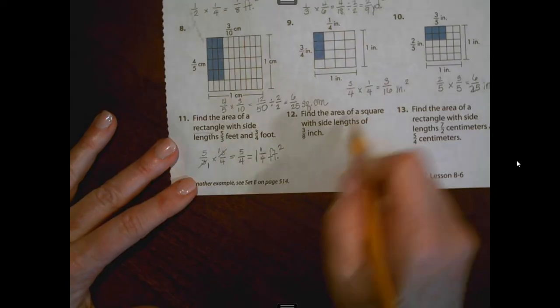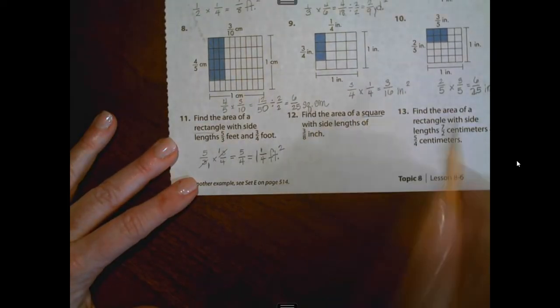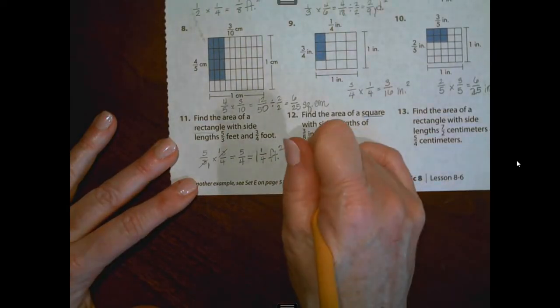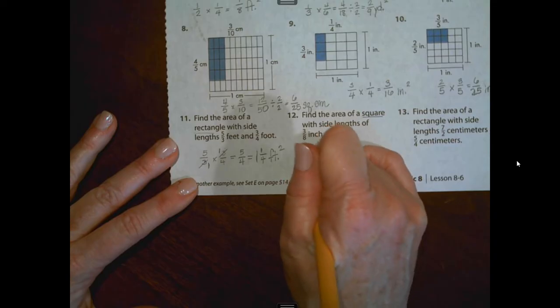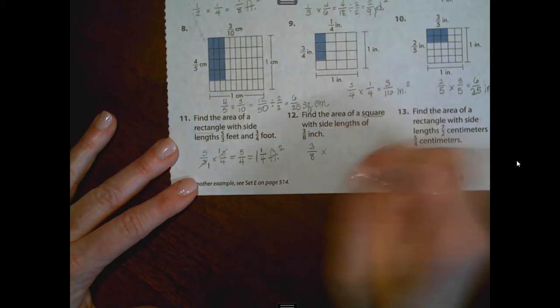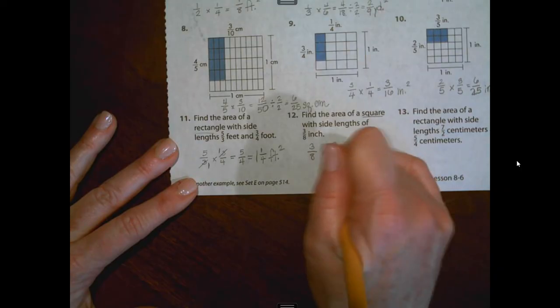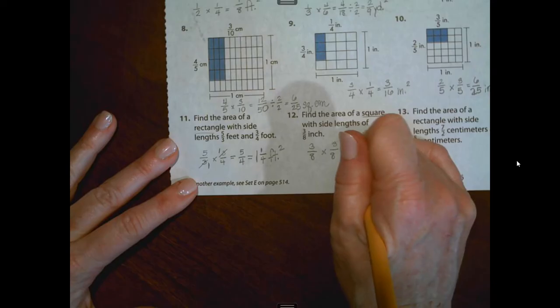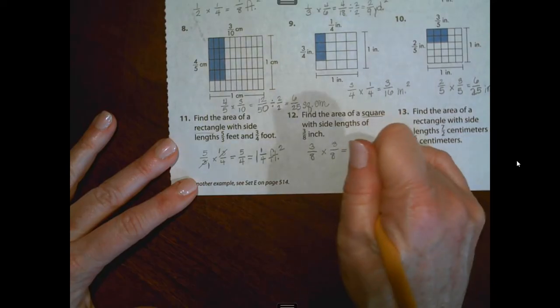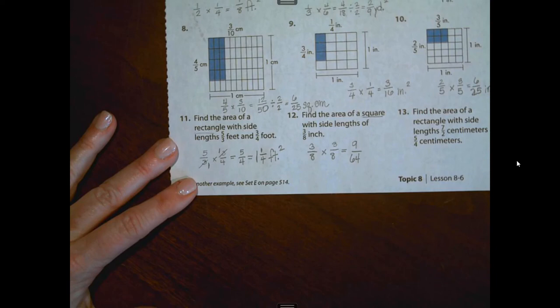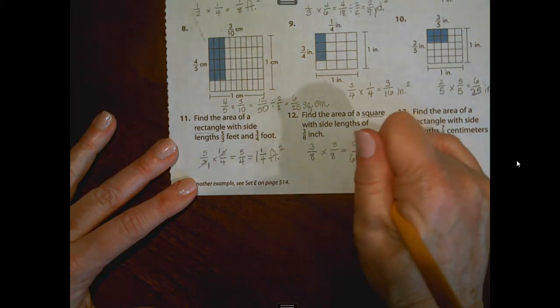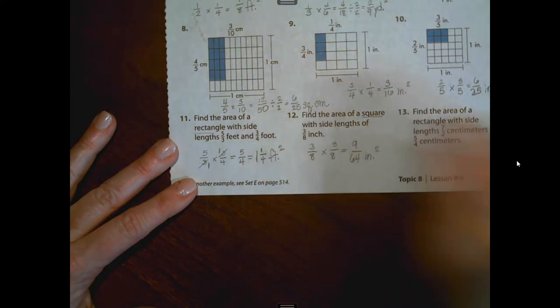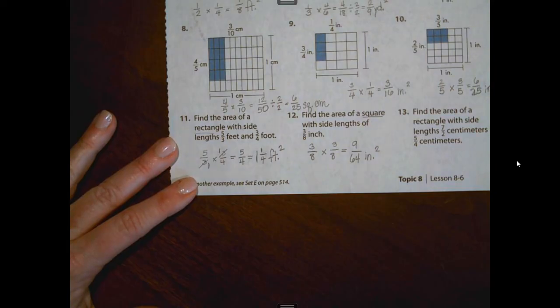Let's look at number twelve. We are finding the area of a square with side lengths of three-eighths inches. So squares, we know all sides are the equal length. So if the length is three-eighths of an inch, so is the width. Three times three, nine. Eight times eight is sixty-four. Nine-sixty-fourths of an inch squared. Nine-sixty-fourths square inches. That would be very small.